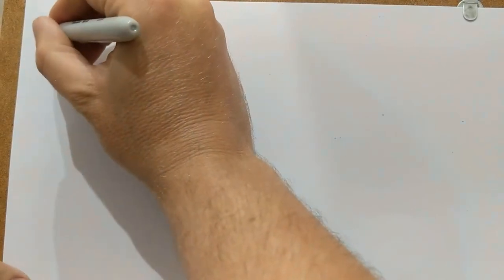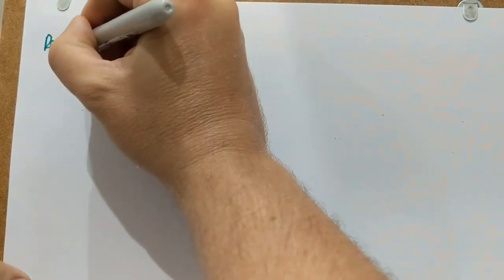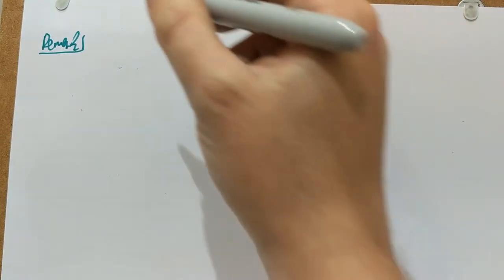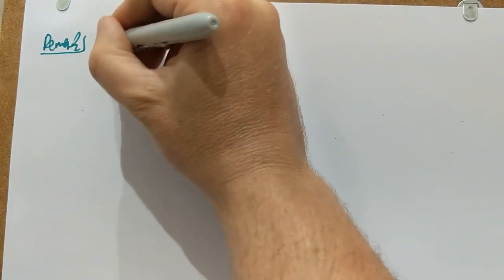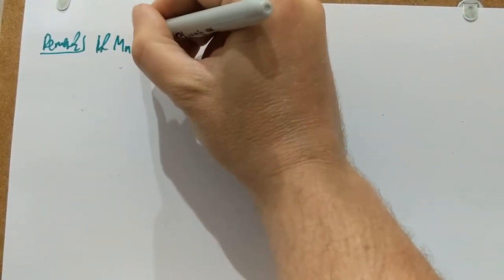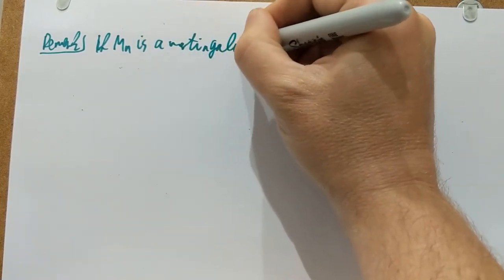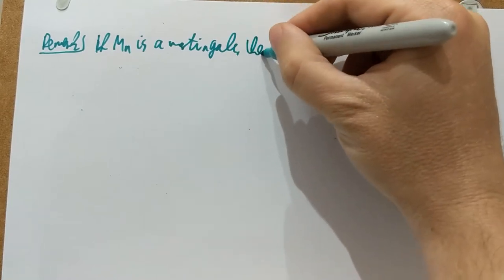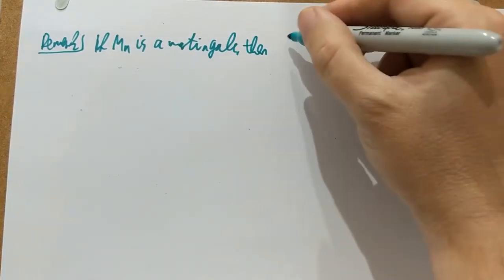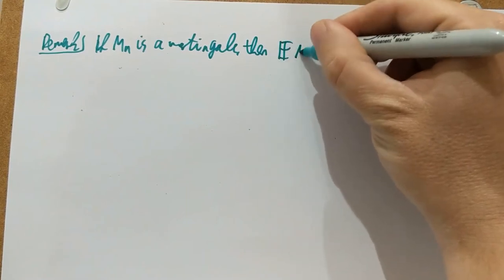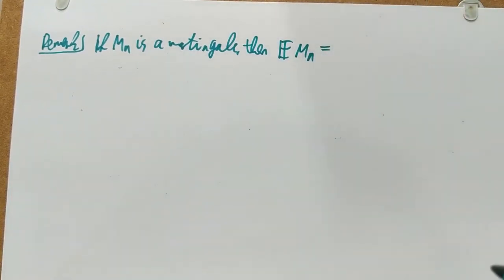I will now show you one of the most useful parts of this unit: Doob's Optional Stopping Theorem. If M_N is a martingale, then the expectation of M_N is the same as the expectation of M_{N-1}.